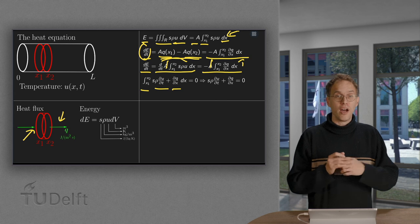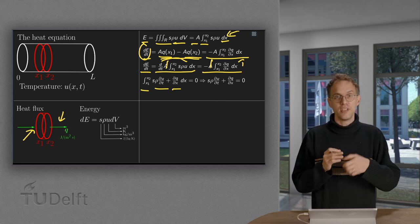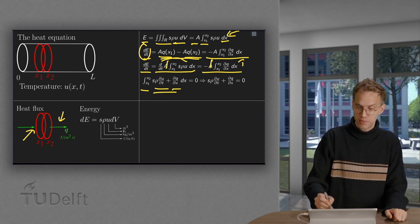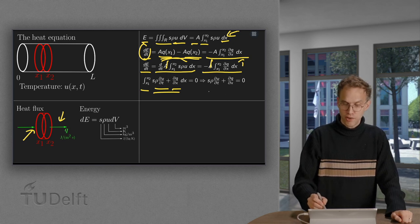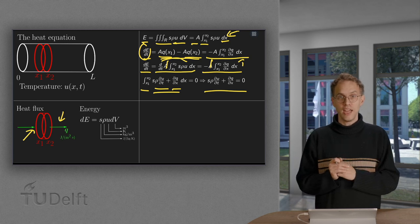Now, X1 and X2 are general, you can pick any X1 and X2 as you like, and if this integral is zero for any X1 and X2, that means that the integrand has to be equal to zero. So, our energy balance leads to the following equation for U: S rho dU dT plus dQ dx equals zero.